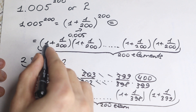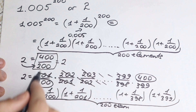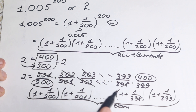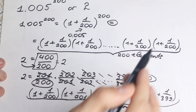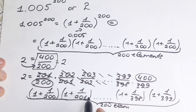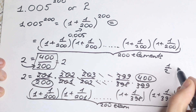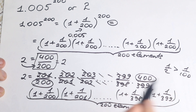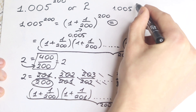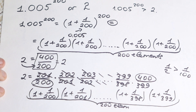Now the final step. We have a product on the left and a product on the right — let's compare them. The first parentheses are the same on both sides. Looking at the remaining terms, the left side has denominators 200, 200, 200... while the right side has 201, 202, 203... Since a smaller denominator gives a larger fraction — for example, 1/2 is bigger than 1/100 — our left-side parentheses are each bigger than the corresponding right-side ones. Therefore, 1.005 to the power 200 is bigger than 2.